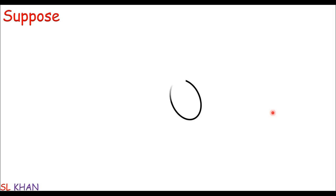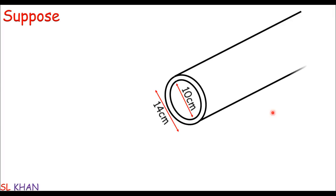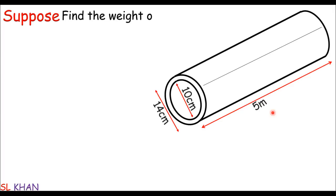Suppose if we are given a pipe having internal diameter is 10 centimeters and external diameter is 14 centimeters, and let's say the length of the pipe is just 5 meters. Now we are just asked to determine the weight of this cast iron pipe.